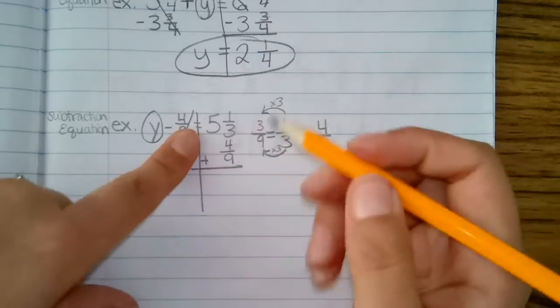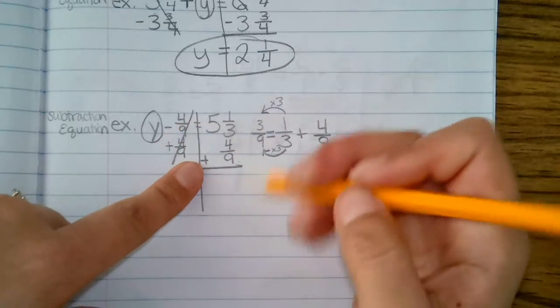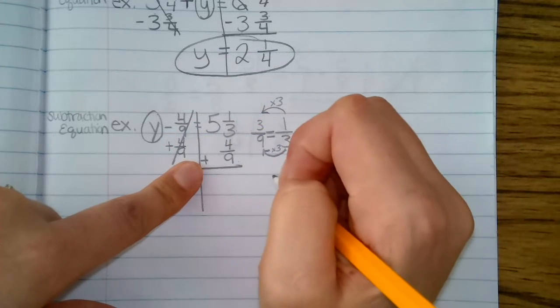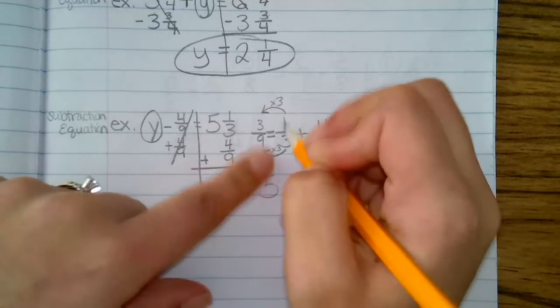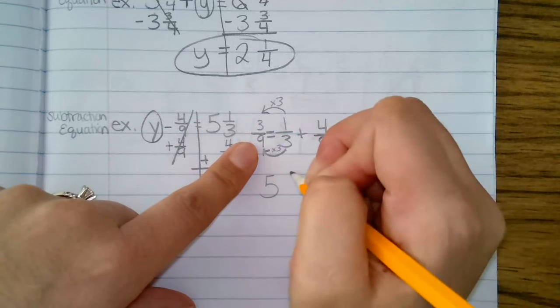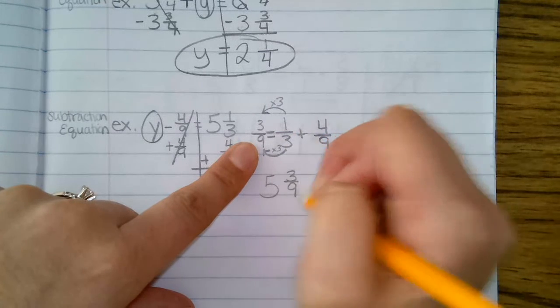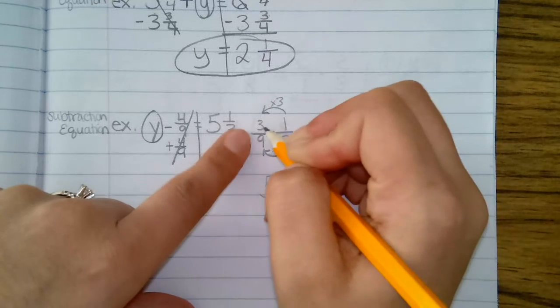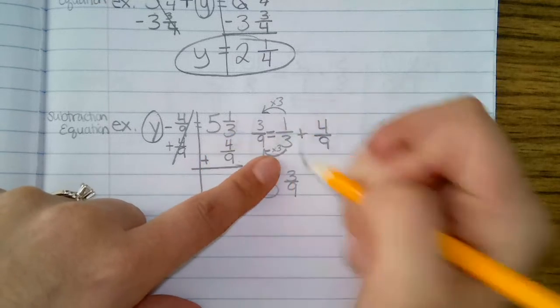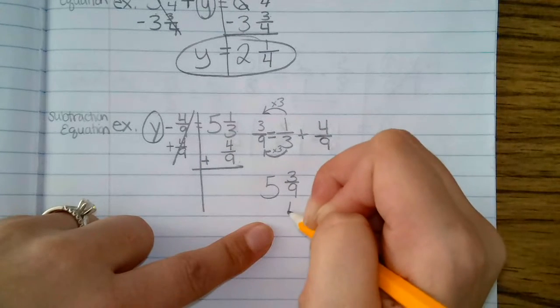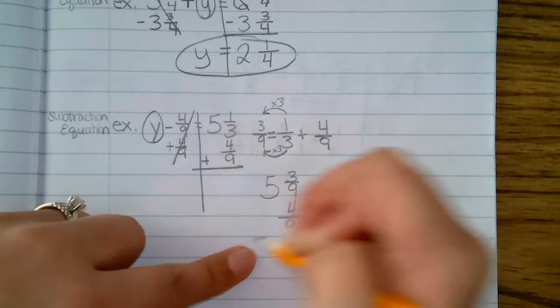So now, instead of five and one third plus four ninths, I'm actually going to rewrite this as five and three ninths. Because that's the equivalent fraction to one third, five and three ninths plus four ninths.